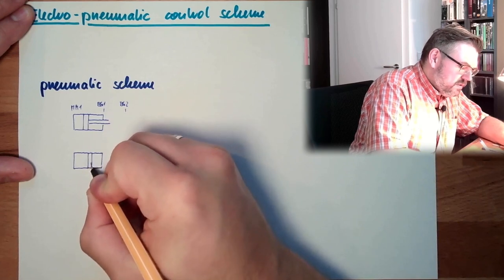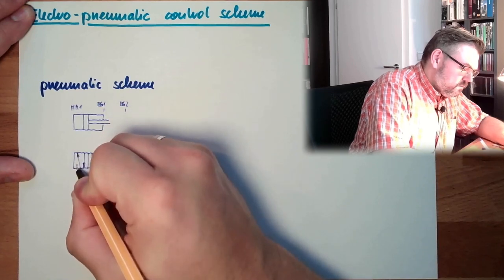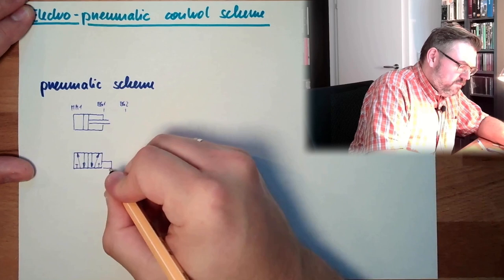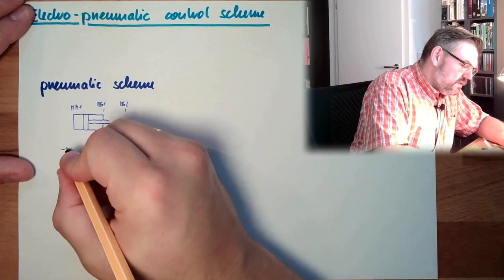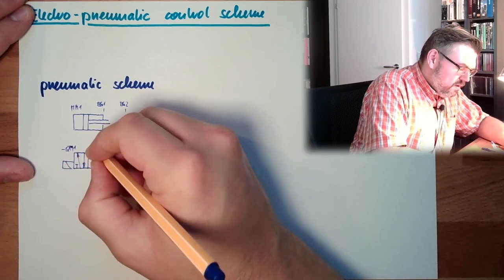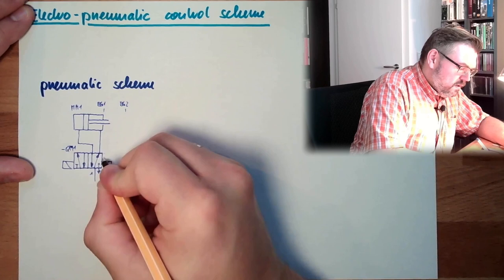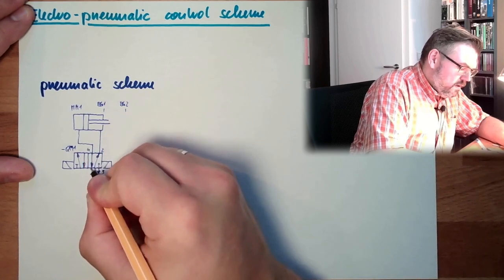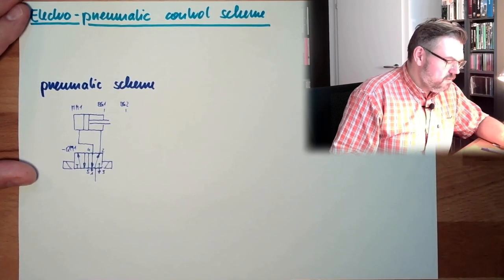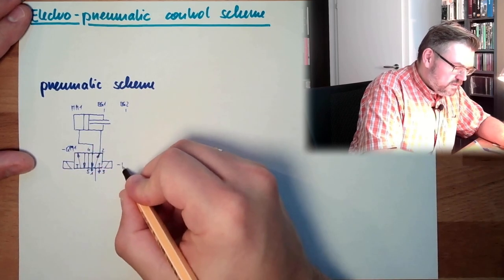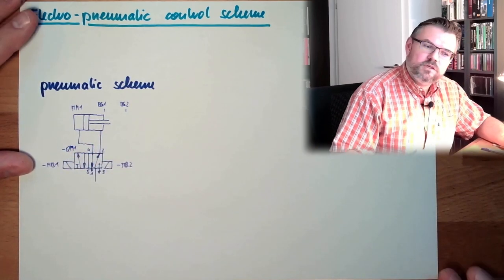It is a double-acting cylinder, so I need a 5-2 way valve. I will simply draw here directly the coils, even if it is pre-controlled usually. This has also a name, QM1 is the switching element. And here we are going to the cylinder. Here we have the 1 connector, 2, 4, 3, 5. This usually also has a name. So this is MB2 and this is MB1, the coils which are operating this.